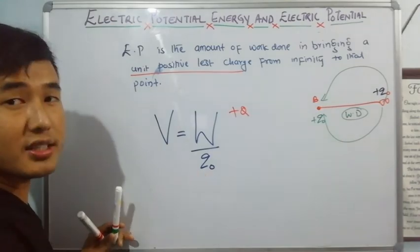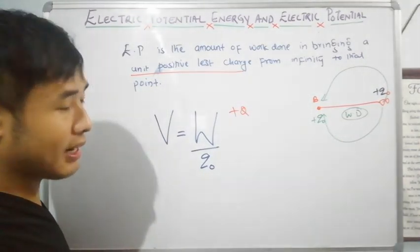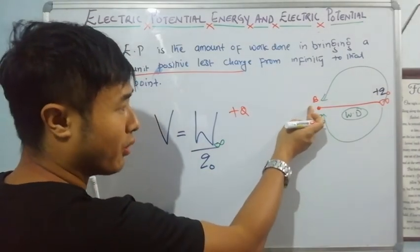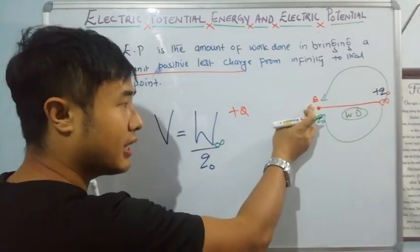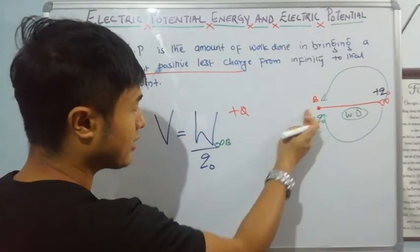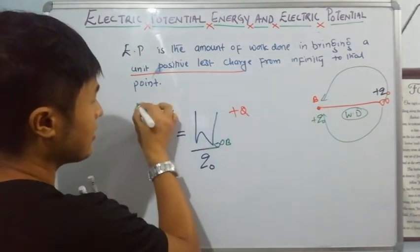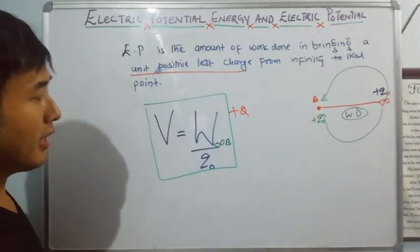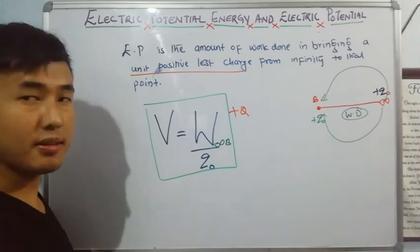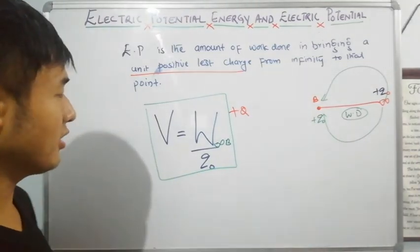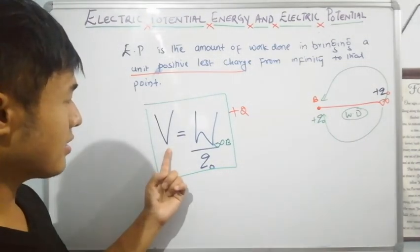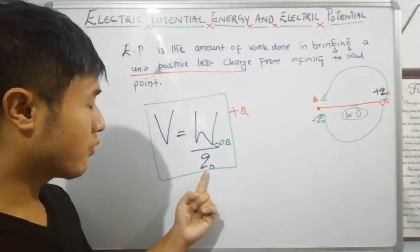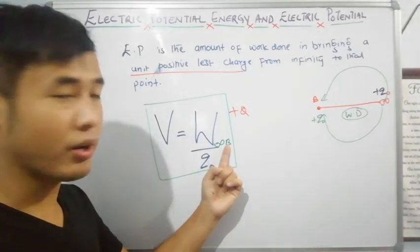Now, regarding the test charge: you bring it from infinity to the other point — say point B — by doing some work. Electric potential is defined as the amount of work done to bring a unit positive test charge from infinity to that point.